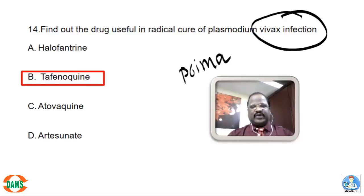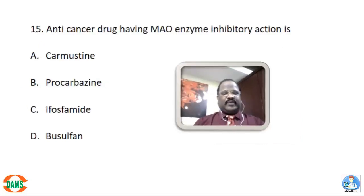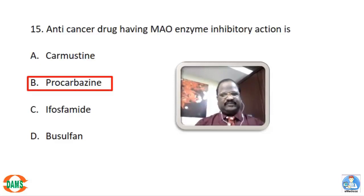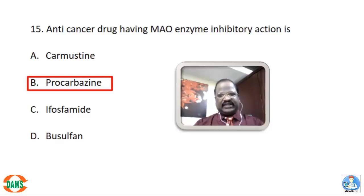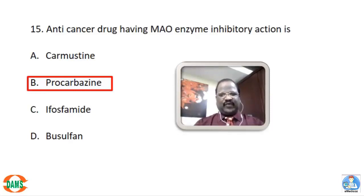Question 15: Which anti-cancer drug has monoamine oxidase (MAO) enzyme inhibitory action? Options are carmustine, procarbazine, ifosfamide, and busulfan. The right answer is procarbazine. Remember — procarbazine causes MAO enzyme inhibition, so there is a risk of cheese reaction. All the options belong to alkylating agents; now we will discuss the important information about these alkylating agents.